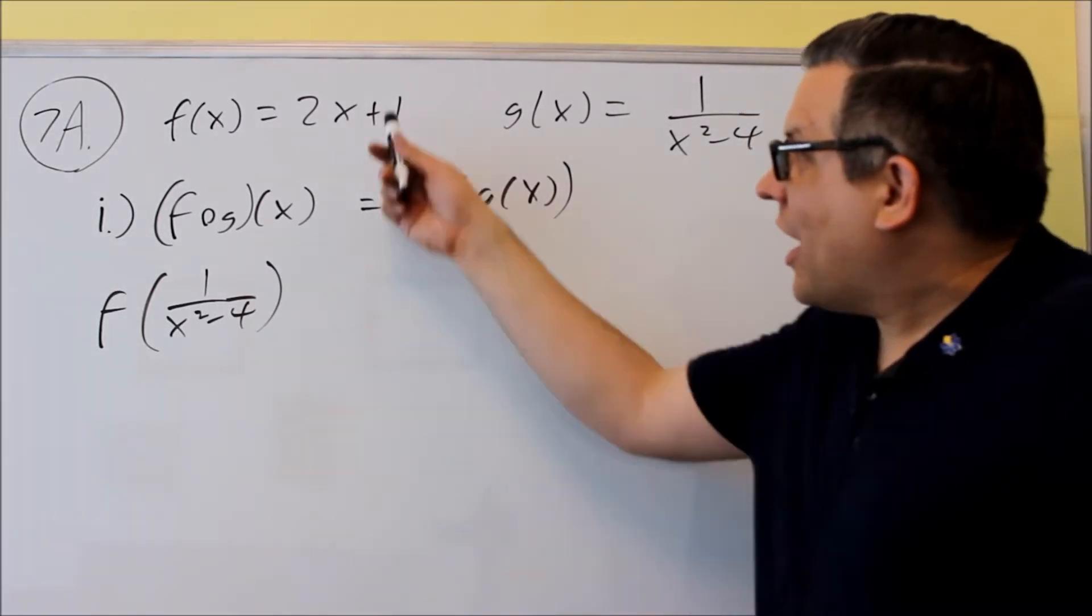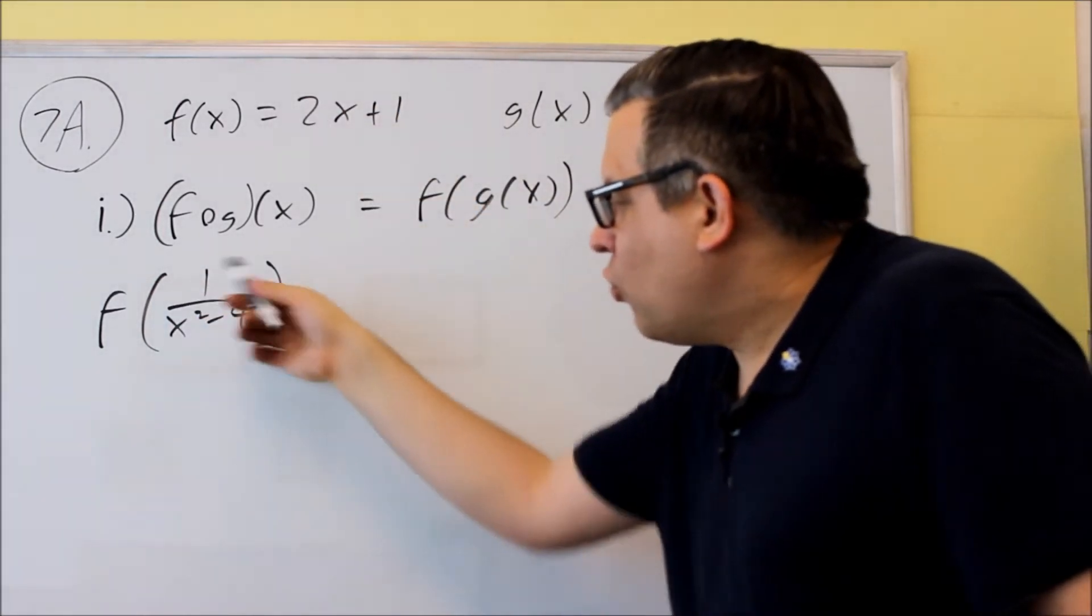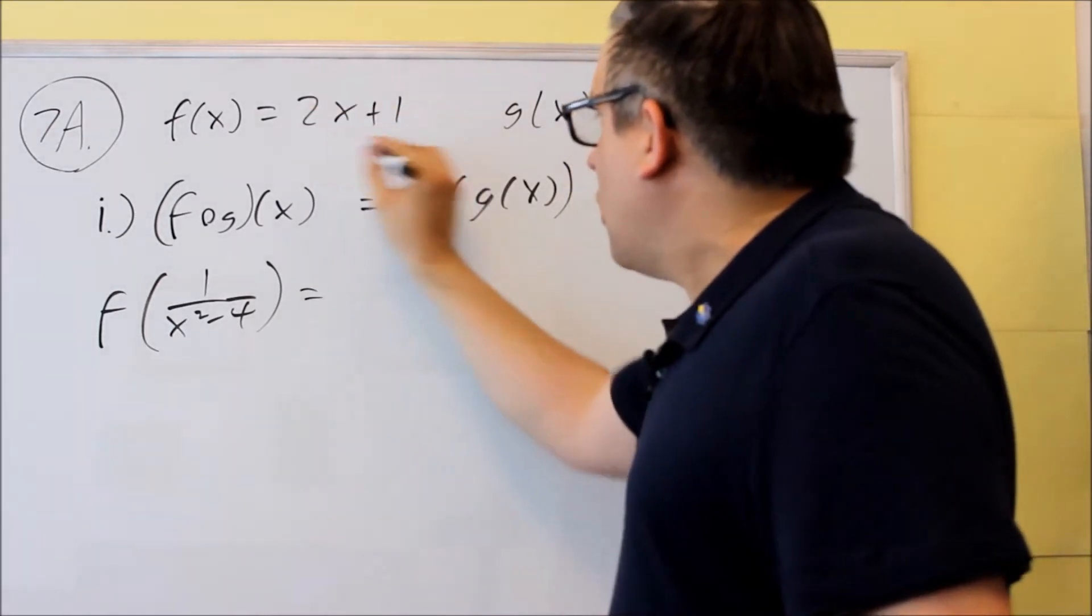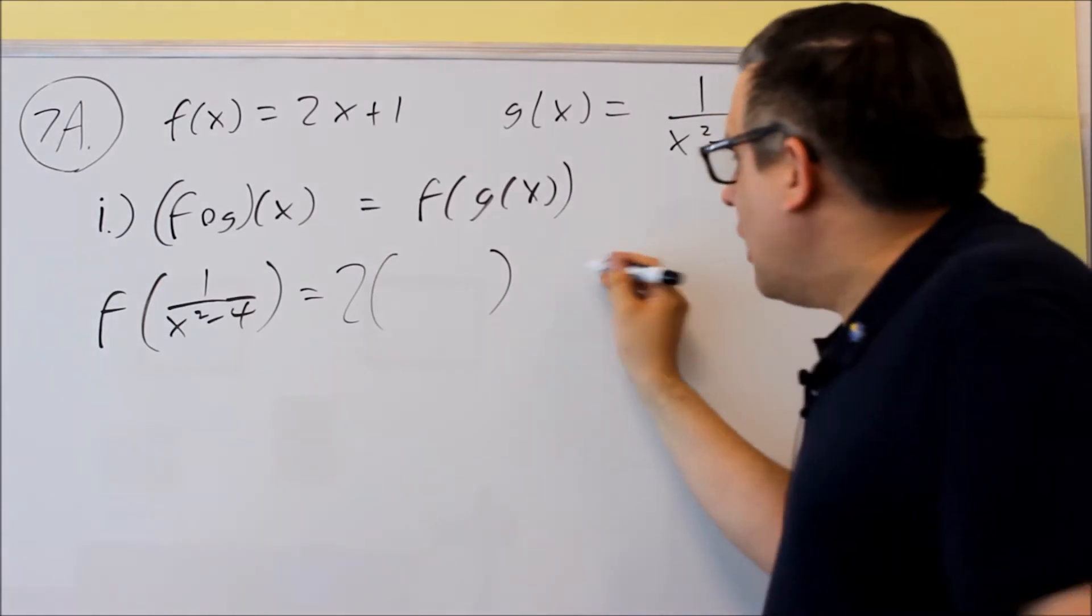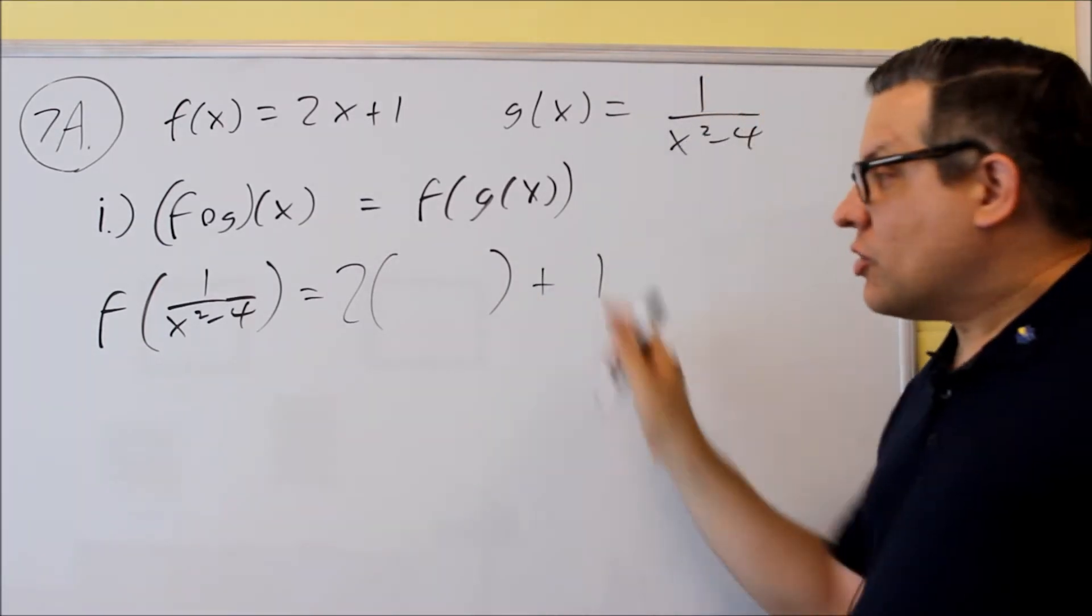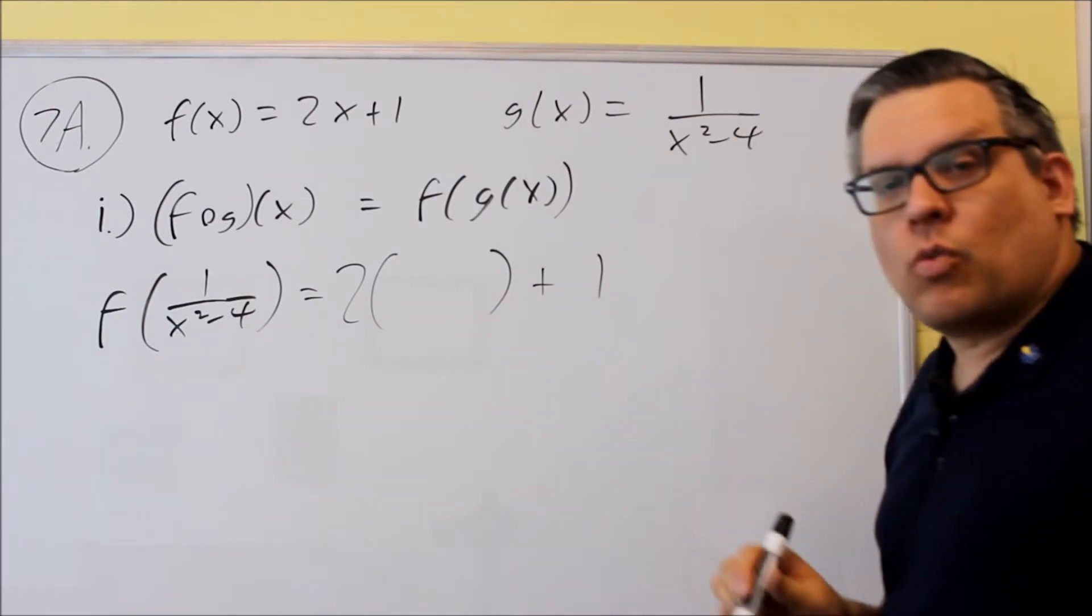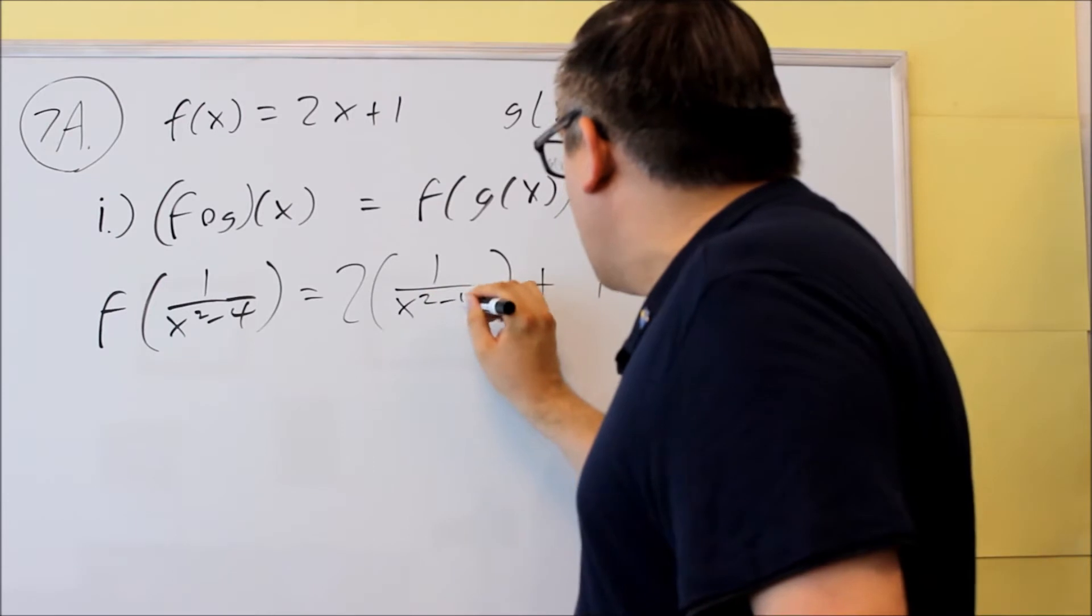So now this is what we want to do. This means that we're going to go to the f function, we're going to replace the x with what you see inside the parentheses. We're going to use this one as a template, so we're going to do 2 times blank and then plus 1. This is our template that we're using. We remove the x from here, replacing it with 1 over x squared minus 4.